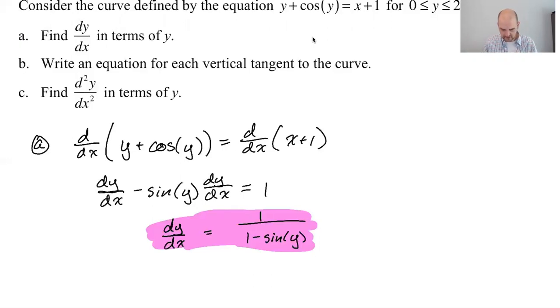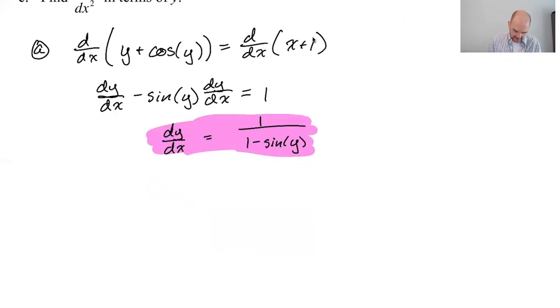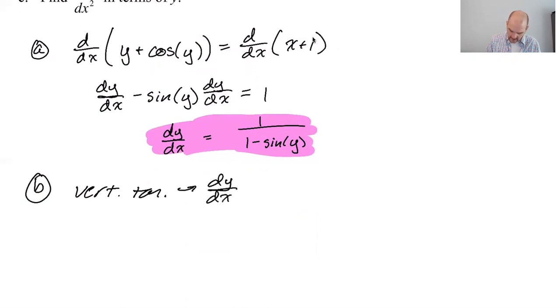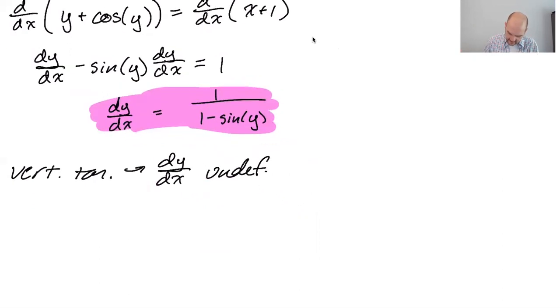All right, part b, write an equation for each vertical tangent to the curve. So vertical tangent means if we have a vertical tangent, then dy/dx is going to be undefined, right? Because a vertical line has an undefined slope. You go up infinity over nothing. So undefined slope, which means, in this case, that 1 minus the sine of y must be equal to 0.